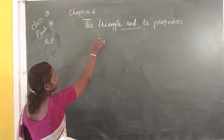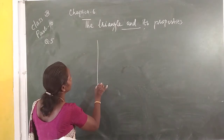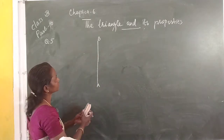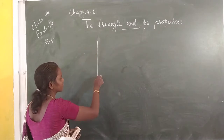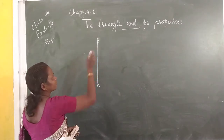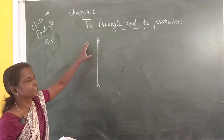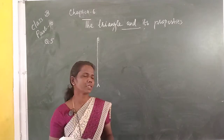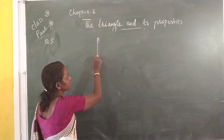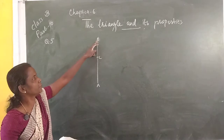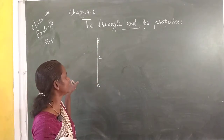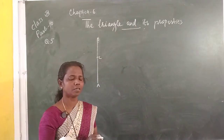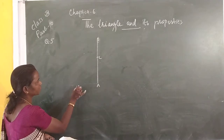For example, this is A, B — AB is a tree. This tree is broken at a height of 5 meters from the ground level, 5 meters above. This is broken, and B touches the ground level. Its top touches the ground at a distance of 12 meters. That point is the top.